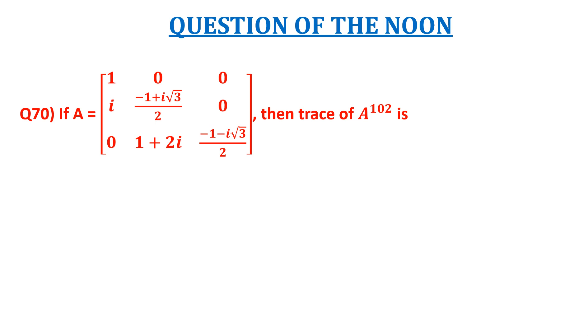Then the trace of A raised to 102 is. The options are A: 0, B: 1, C: 2, and D: 3.